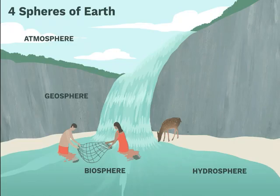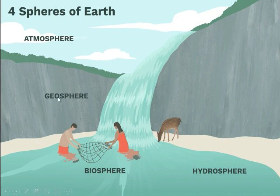To summarize the four spheres of the Earth: we have the atmosphere, which contains all the gaseous part of the Earth; the geosphere, which has all the solid part; the hydrosphere, which contains the liquid part; and the biosphere, where life exists.